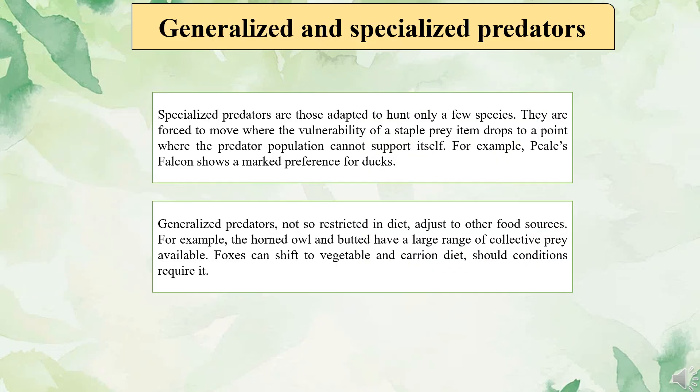Generalized and specialized predators: by their hunting activities, predators can be regarded as specialized or generalized. Specialized predators are those adapted to hunt only a few species. They are forced to move when the vulnerability of available prey items drops to a point where the predator population cannot support itself. For example, the Welsh falcon shows a marked preference for doves and pheasants.